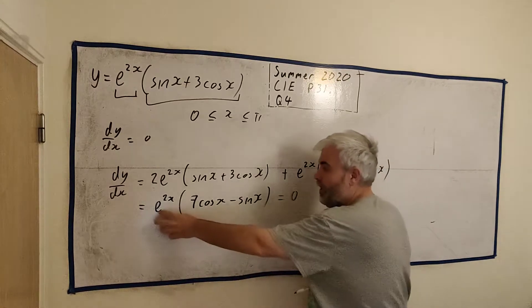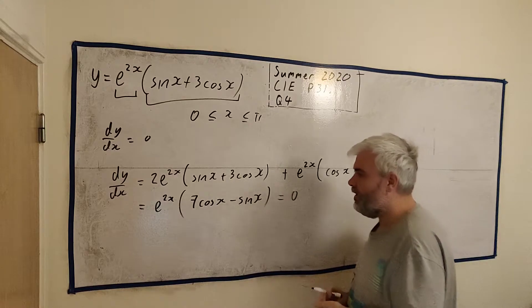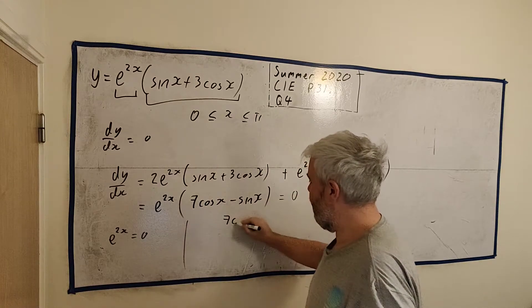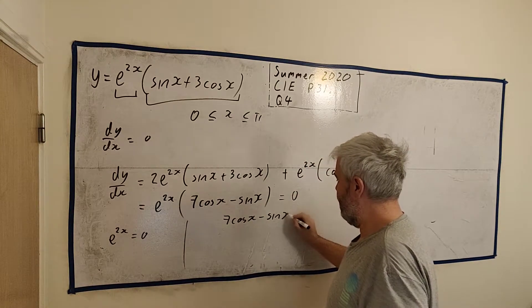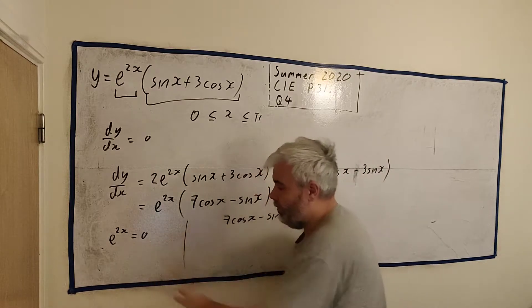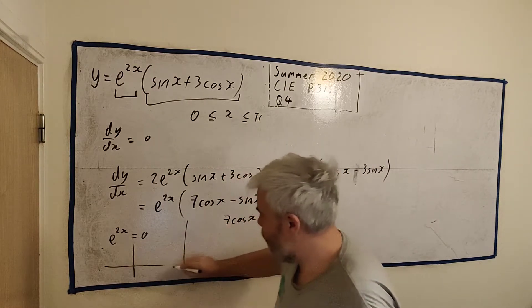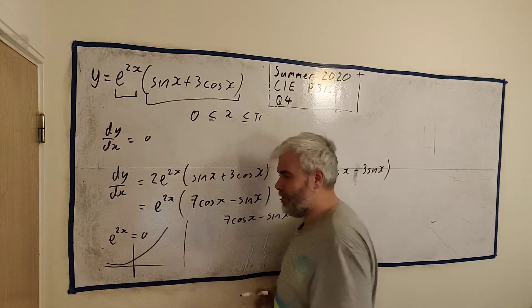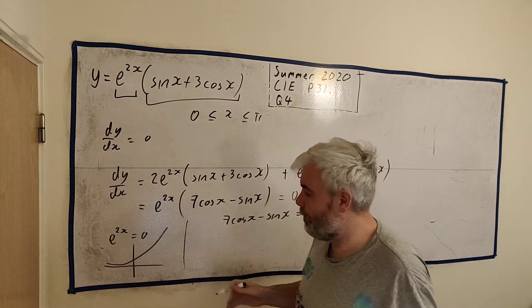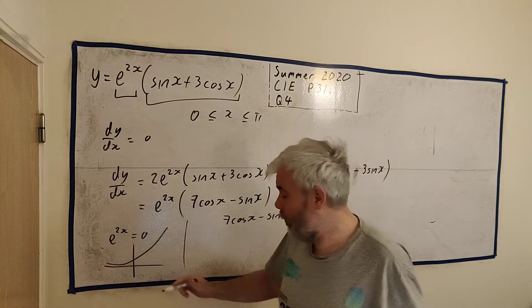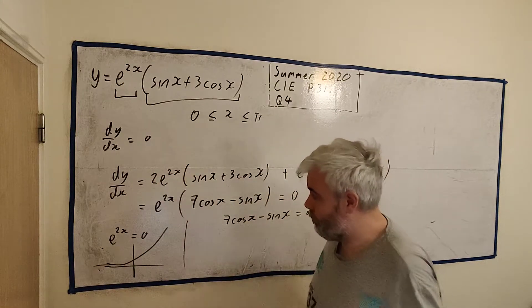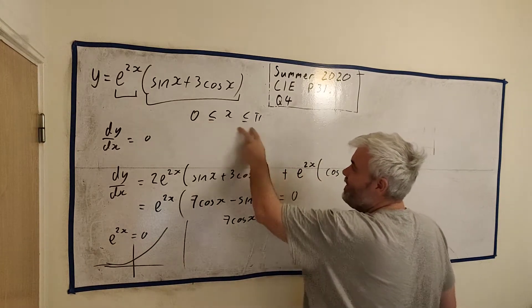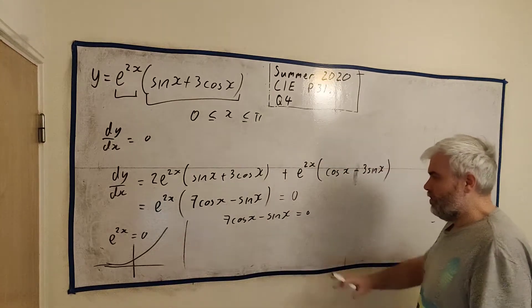So this is good. Once we have 2 things multiplying equal 0, makes it much easier. The answer is either e to the 2x is equal 0, or the answer is 7 cosine x minus sine x is equal 0. This one's impossible. Let me draw a little picture. This is what an exponential function looks like. It never quite hits 0. When x becomes close to minus infinity or as it approaches minus infinity, it will approach 0 but it won't quite get there. So this is never true except when x approaches minus infinity. And minus infinity certainly is not in between these two. So that's not our answer. So this one hopefully is.